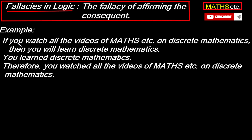Consider this argument. The first premise is: if you watch all the videos of Maths.etc on discrete mathematics, then you will learn discrete mathematics. Premise 1 is saying that if you watch all the discrete maths videos on Maths.etc, then you will be able to learn discrete mathematics. Premise 2 is saying: you have learned discrete mathematics.